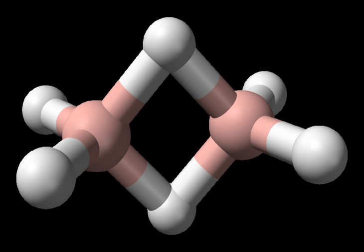Silane is an inorganic compound with chemical formula silicon hydride (SiH4), making it a group 14 hydride. It is a colorless, pyrophoric gas with a sharp, repulsive smell, somewhat similar to that of acetic acid.